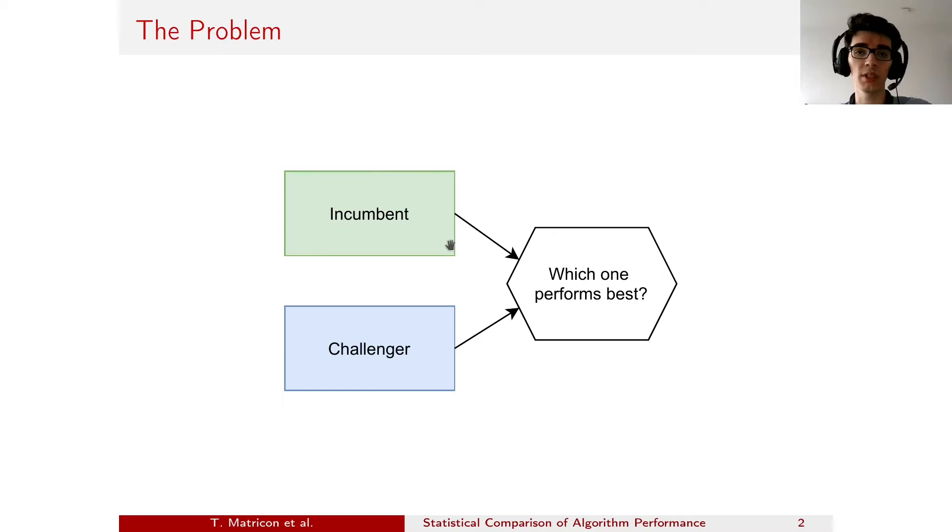We have the first algorithm, which is the incumbent. It's typically some well-known algorithm which we already have data about. And then there's the challenger, which is seen as a black box, so we have no data about it.